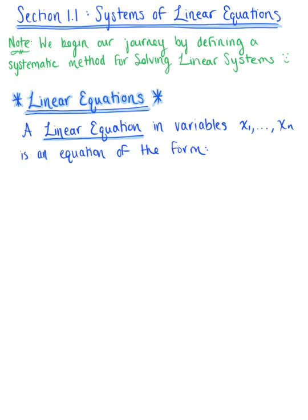So what is a linear system? Well, before we can get to the system, we've got to understand what's a linear equation. So a linear equation in variables x sub 1 through x sub n is simply an equation of the following form.